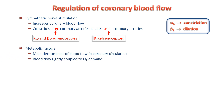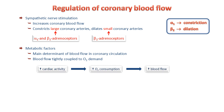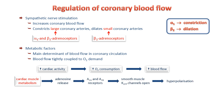As cardiac muscle is a highly metabolic tissue, metabolic factors are important regulators of coronary blood flow. As oxygen consumption increases due to increased cardiac work, blood flow increases in order to match blood flow to oxygen demand. A major metabolite is adenosine, which acts on adenosine receptors in the smooth muscle of the arteries to evoke muscle relaxation. The receptors involved are the adenosine A2A and A2B subtypes.